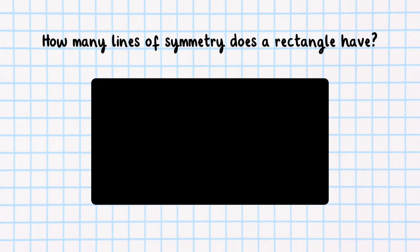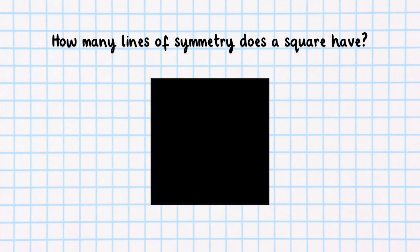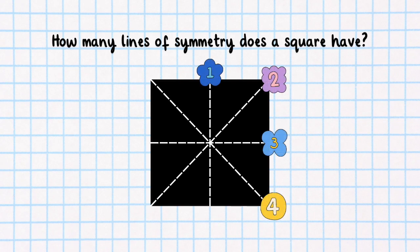Now let's look at this rectangle. A rectangle has two. What about this square? A square has four.